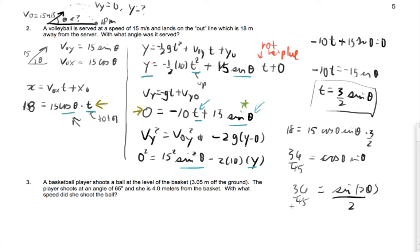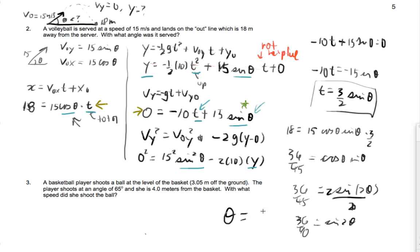So it turns out 36 over 45 is going to equal sine of 2 theta divided by 2. So I'm going to end up getting here, and let me make absolutely sure that I have it right. Actually, no, this is going to be 2 sine of theta, cosine theta. So I'm going to end up actually getting here that 36 over 90 is the sine of 2 theta. And when I actually solve and get theta, what I'll end up getting for my launch angle is 23.6 degrees.